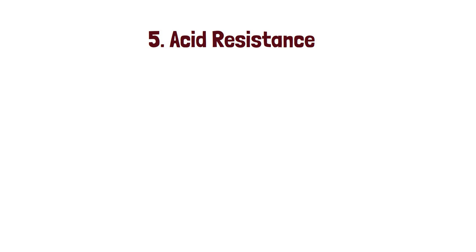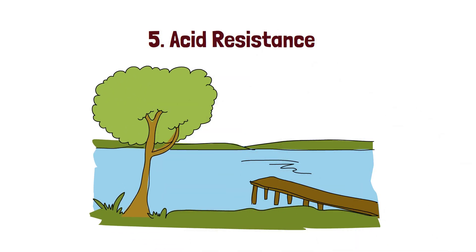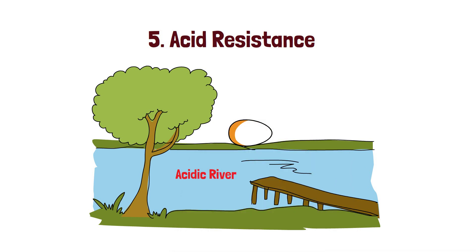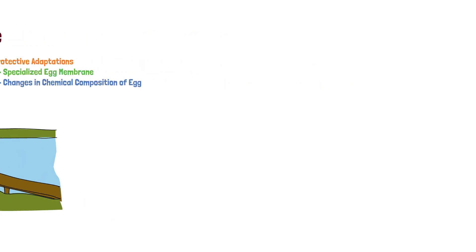5. Acid resistance. Some snail eggs possess adaptations that protect them from acidic environments. This is particularly advantageous in habitats with high acidity, such as acidic lakes or rivers. The protective adaptations can include specialized egg membranes or changes in the chemical composition of the eggs, enabling them to survive in otherwise inhospitable conditions.